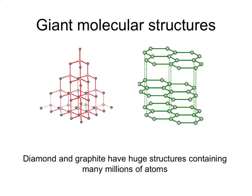So giant molecular structures like diamond and graphite have got huge structures containing many, many millions or billions of atoms.